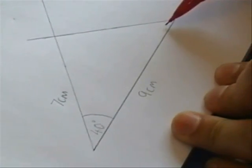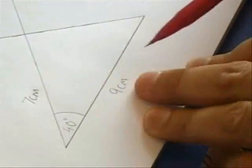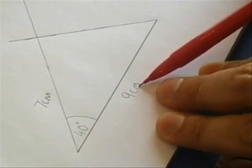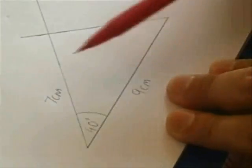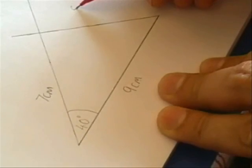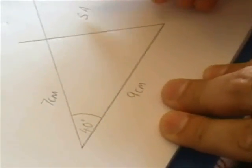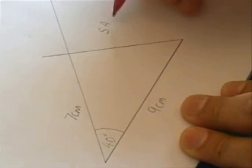And in this particular case, because we were given a side, we were given an angle and we were given a side, this is actually called SAS.